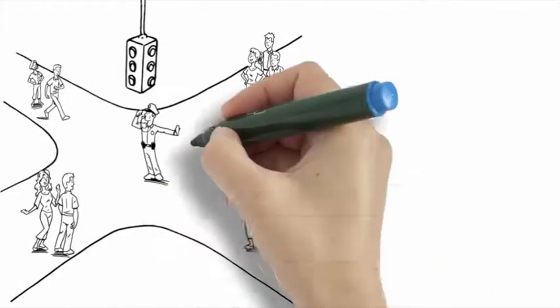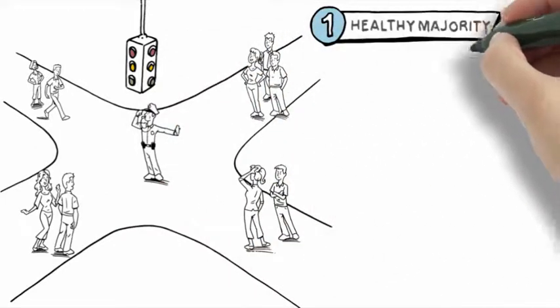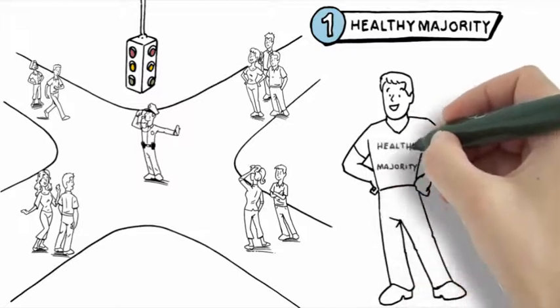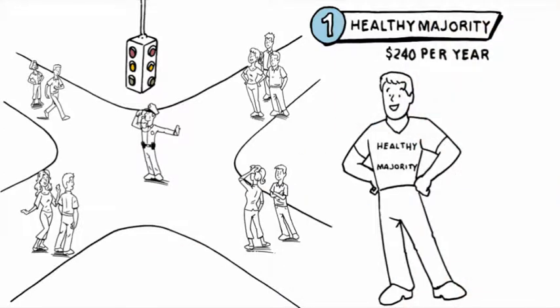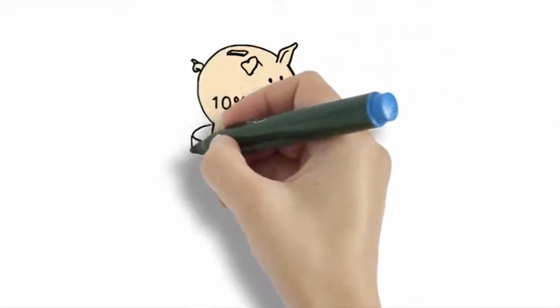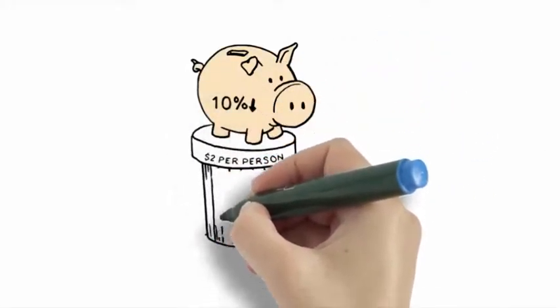The first population cohort, and by far the largest, is the healthy majority. In any year, half of all Americans average only $240 in healthcare spending. So reducing total spending for this cohort by 10% would generate savings of $2 per person per month.